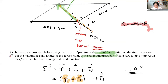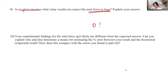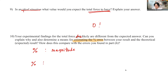Then number nine: the ideal situation gives total force equal to zero. Number ten: your experimental findings for the total force will likely differ from the expected value. So I want you to estimate the percentage error — both in magnitude and in angle.